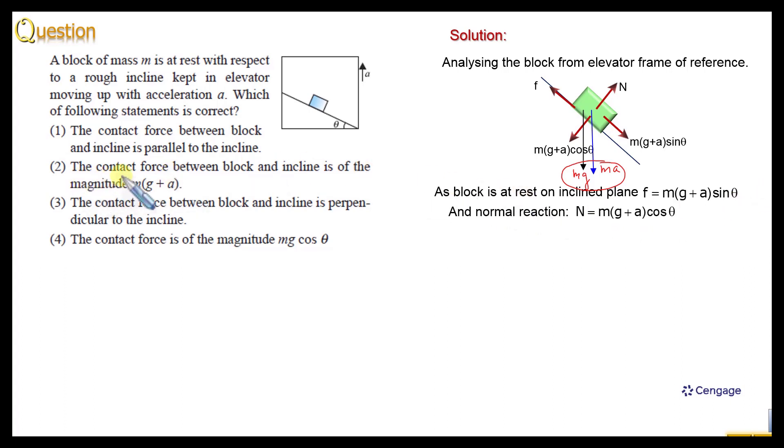Now, we need to find the contact force. Contact force is the vector summation of the normal reaction and friction force. So here we can write N net equal to under root f squared plus N squared.